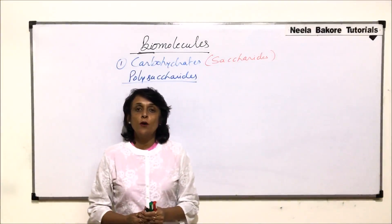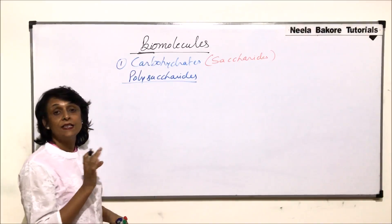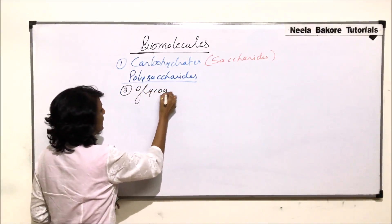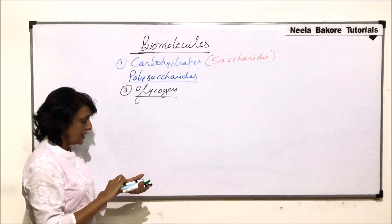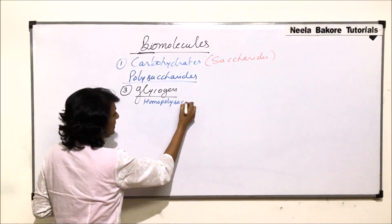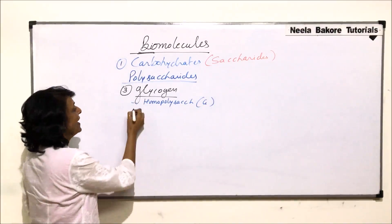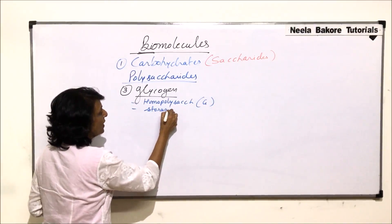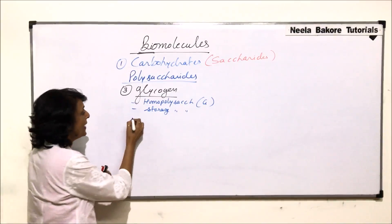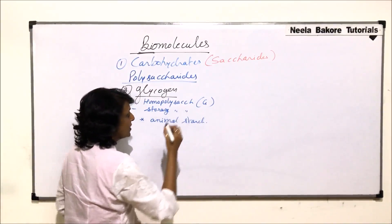In this section we'll talk about a few more polysaccharides. We have already discussed starch and cellulose. The next one is glycogen. Glycogen is a homopolysaccharide — it is made up of only glucose molecules — and it is a storage polysaccharide stored in animals.